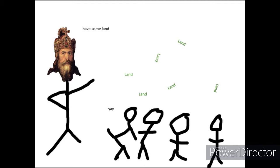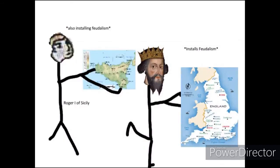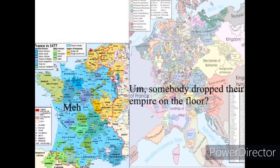It all started in the Frankish Empire in the 8th century AD. Frankish kings, notably Charlemagne, gave out fiefs to loyal nobles in exchange for services. It became widespread in Europe during the 11th century due to the Normans conquering places like England and Sicily. With the collapse of the Frankish Empire, this led to two powerful feudal kingdoms: the multi-ethnic complex known as the Holy Roman Empire, centered around Germany, and the Kingdom of France.